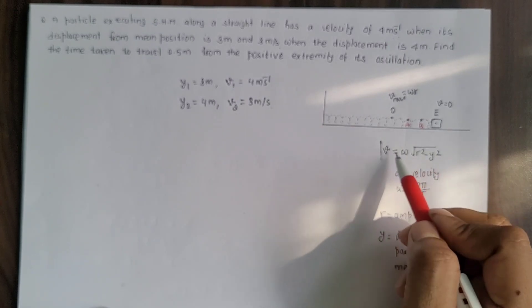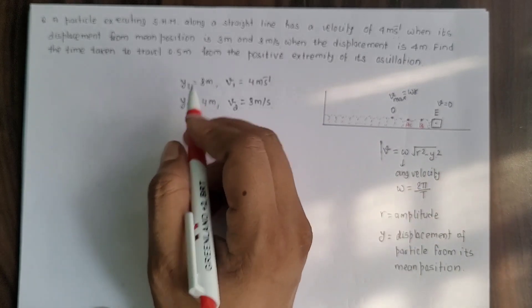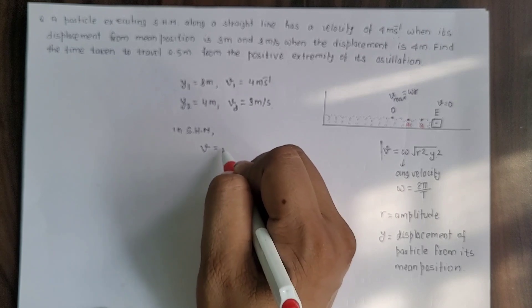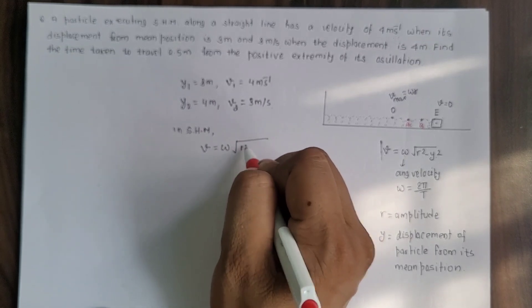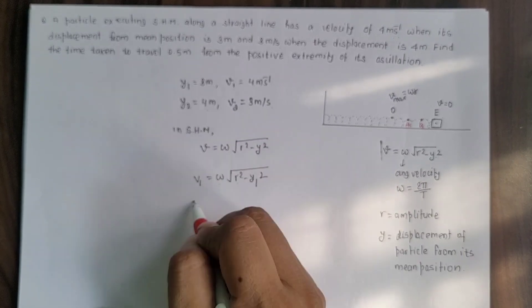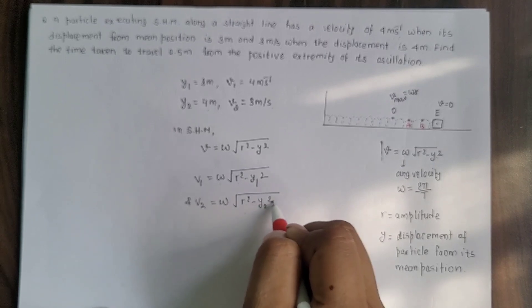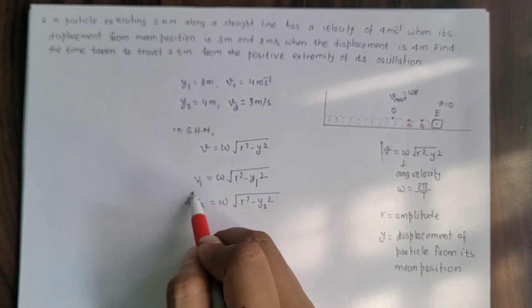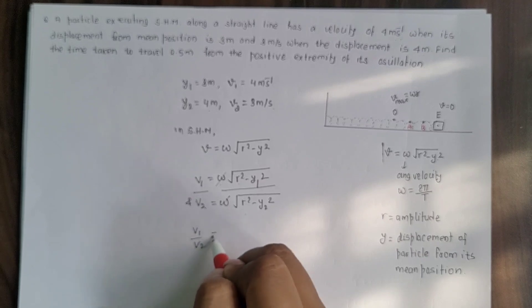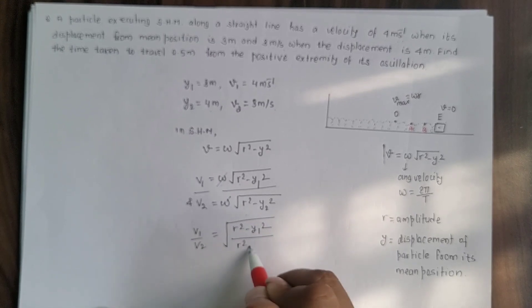Using the velocity-displacement relation in SHM, we can calculate ω. Writing the equations for the two cases: v₁ = ω√(r² - y₁²) and v₂ = ω√(r² - y₂²). Dividing equation 1 by equation 2, ω cancels, giving v₁/v₂ = √[(r² - y₁²)/(r² - y₂²)].